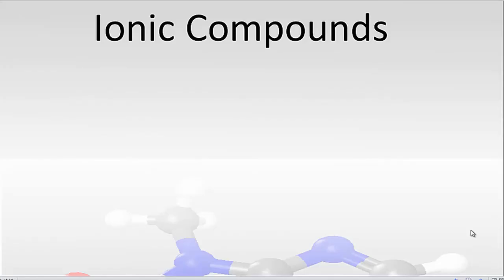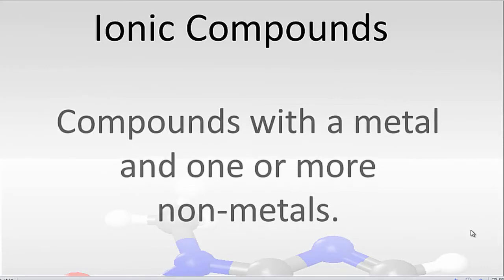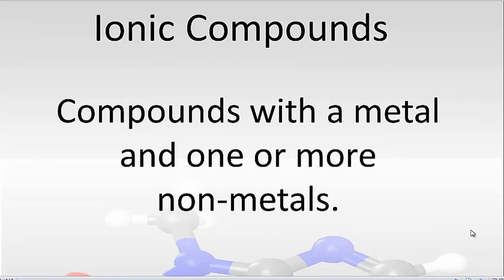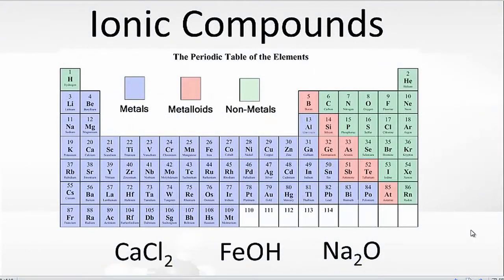So for ionic compounds, we have a compound where we have a metal and one or more non-metals. We can look at the periodic table and see that we have metals, those are the ones in the blue, and then the non-metals, those are in the green.